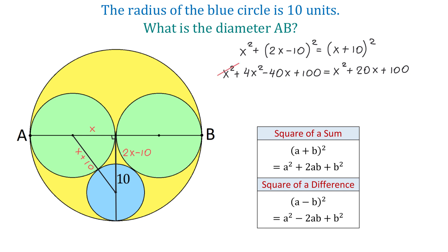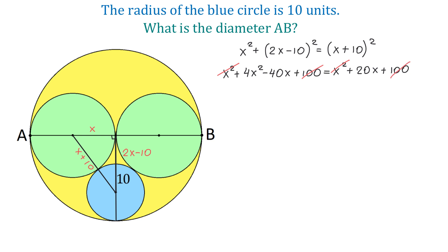Now let's cancel X squared on both sides and 100 on both sides. And now we will have 4X squared minus 40X equals 20X. Let's get all the terms to one side by subtracting 20X. And now we will have 4X squared minus 60X equals 0.